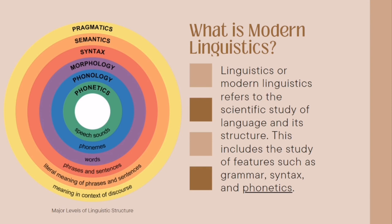When we say modern linguistics, it refers to the scientific study of language and its structure. This includes the study of features such as grammar, syntax, and phonetics. As you can see from the picture, these are the major levels of linguistic structure.